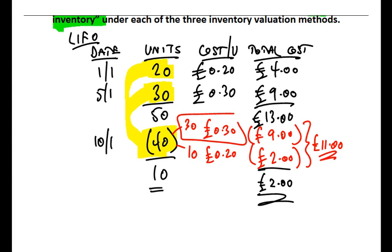And you can double check the logic of that figure. Always worth just checking that your figures make sense. Remember, under LIFO, we've got rid of all 30 units that we bought on the 5th of January, and we got rid of 10 units from the first, meaning that the 10 remaining bananas were all from that first purchase on the 1st of January.